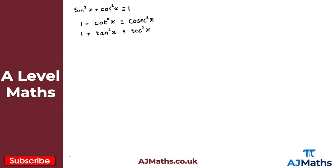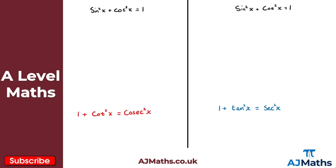The question now is how do we prove these trig identities. We're going to show how we can go from sin²x plus cos²x equals 1 to each new identity. For the first one, we're going to divide through on both sides by sin²x.